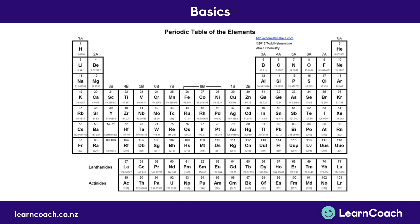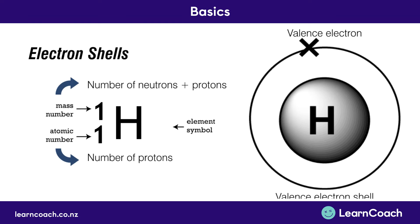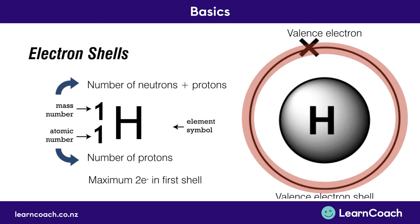Now we'll look at the periodic table and discuss what the atoms look like. Starting with hydrogen: hydrogen's mass number is one, which means the number of neutrons and protons is one. Hydrogen actually only has one proton and doesn't have any neutrons. Its atomic number is also one, which is the number of protons. We know hydrogen must have one electron as well, because it has no net charge. The positive proton must be balanced by one negative electron. You can see its valence electron is at the top — valence just means outer. The first shell is its valence electron shell, and remember, the maximum is two electrons in the first shell. So hydrogen isn't fully stable; it needs two electrons in its shell to be stable.